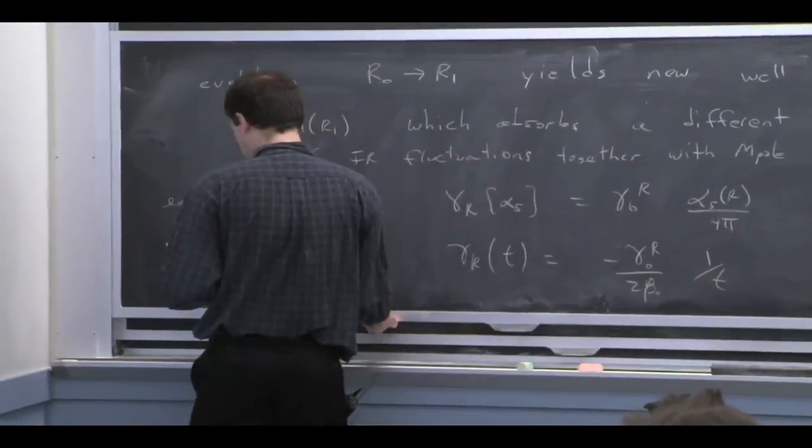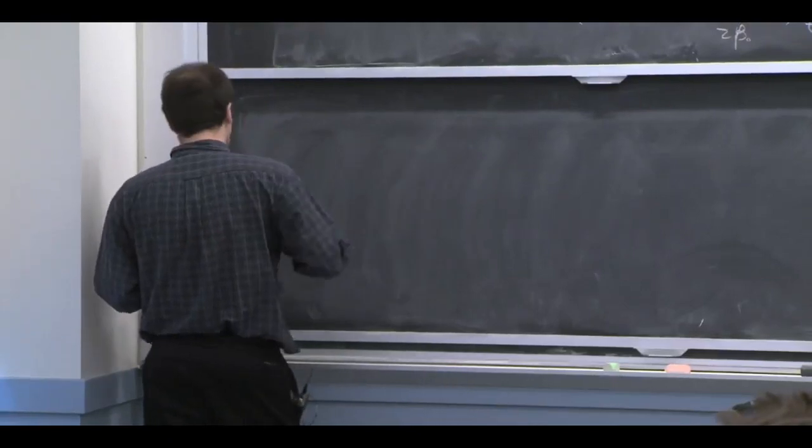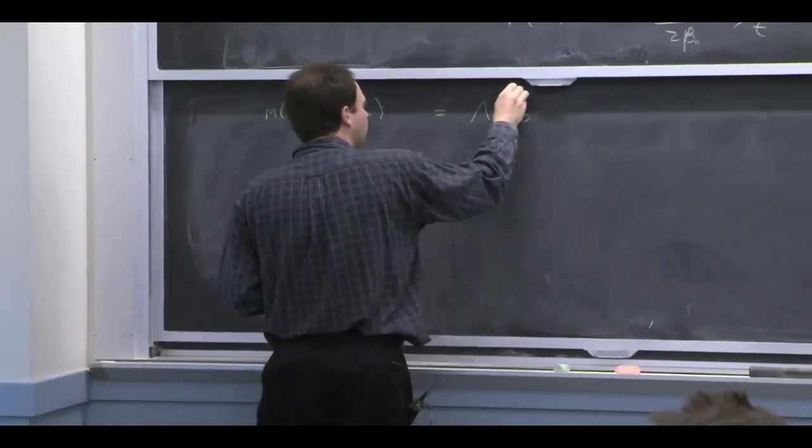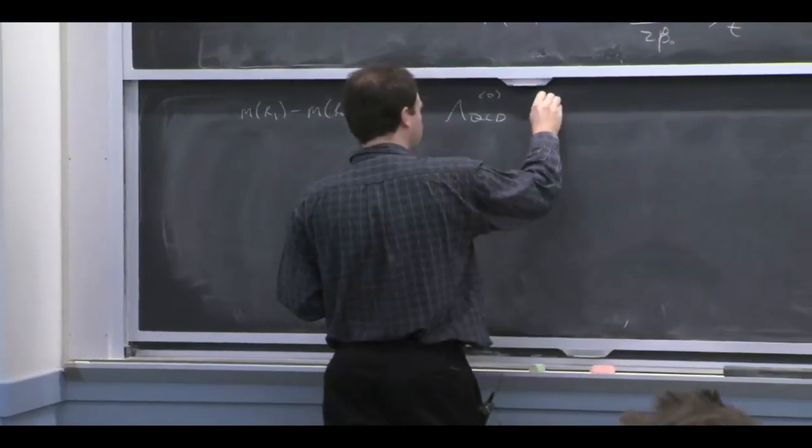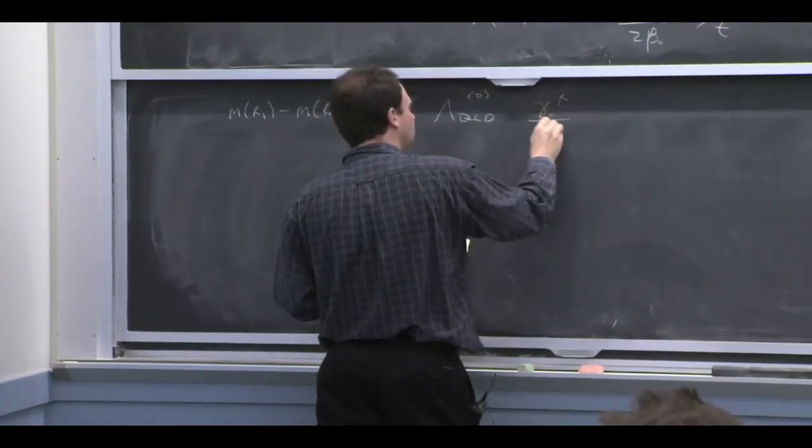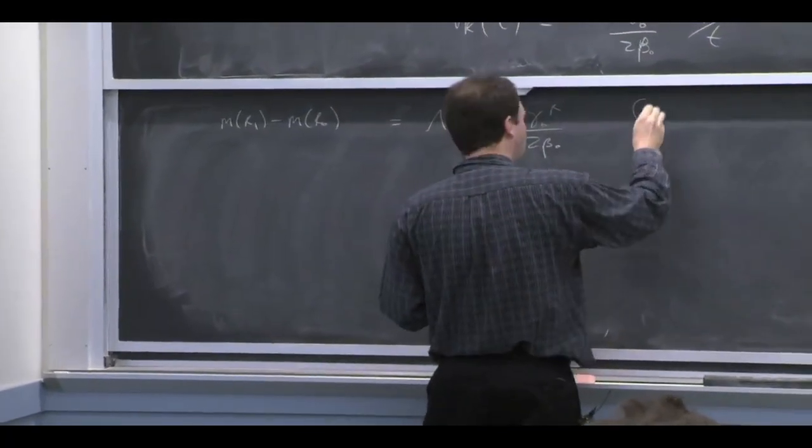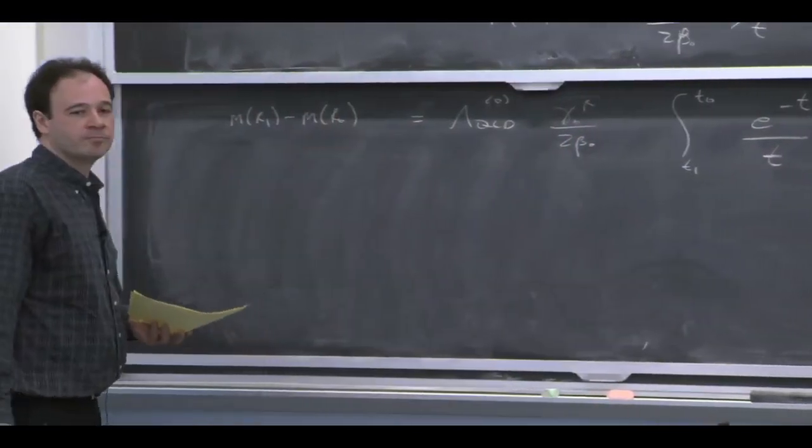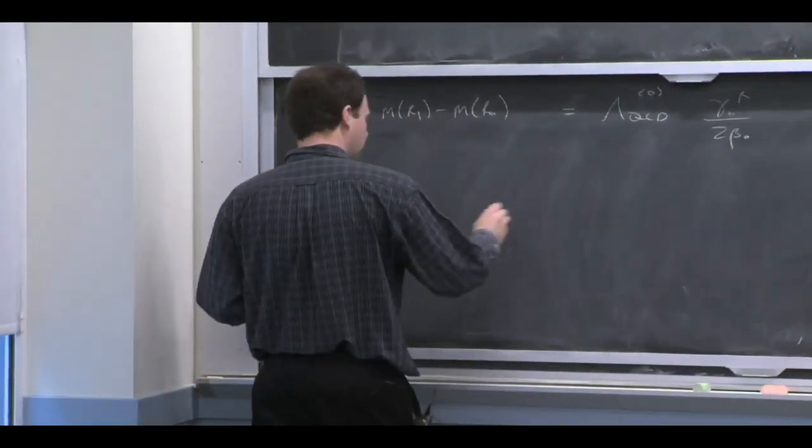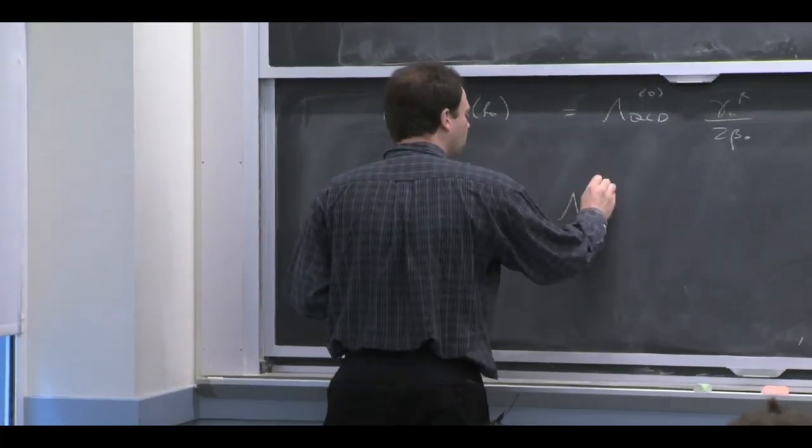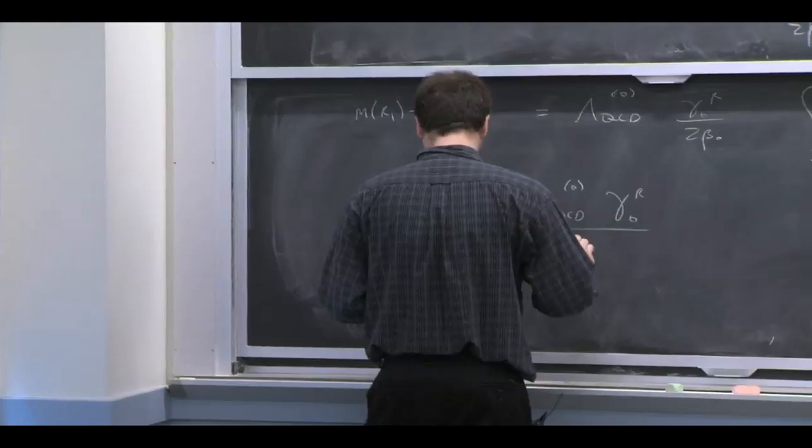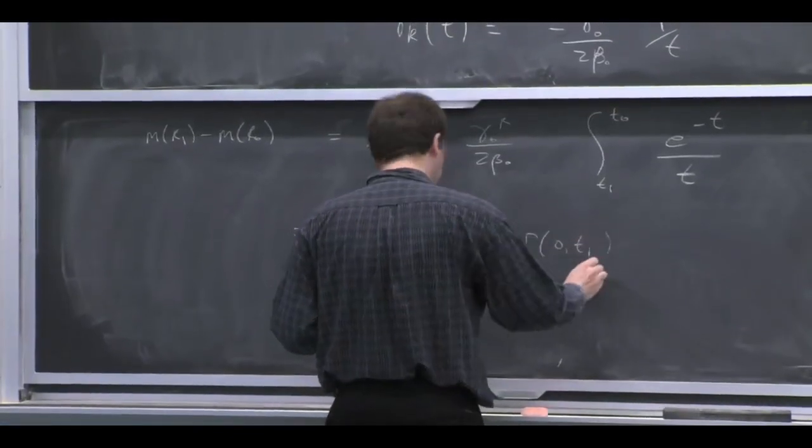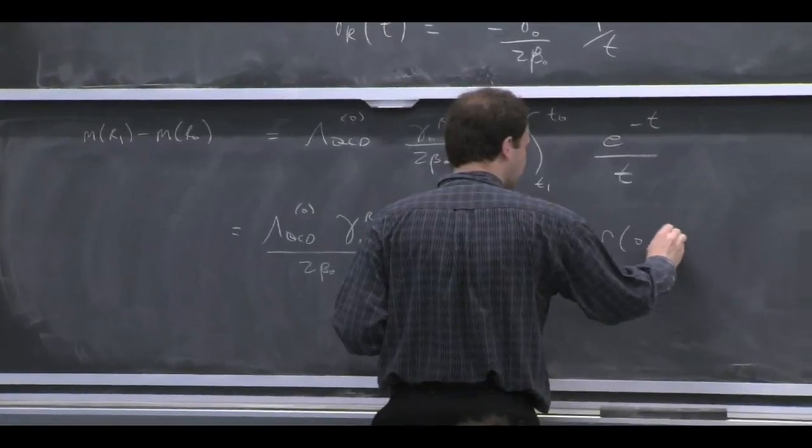So if we're at leading log, we should think about having the leading log lambda of the QCD. So that's what the 0 means, this factor. And the integral we'd have to do would be this one, e to the minus T over T. So you see that T equals 0 is where there could be a problem, but away from T equals 0, there's no problem. Do that integral gives you an incomplete gamma function. That's just a way of saying that there's this special function that's defined to be that integral.